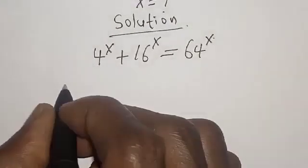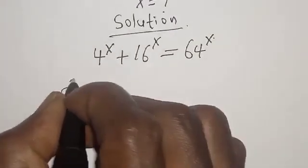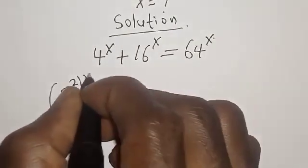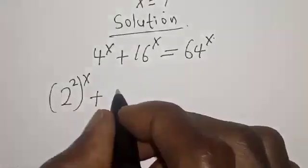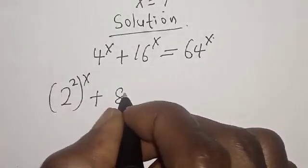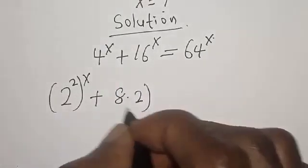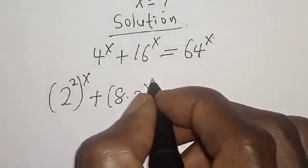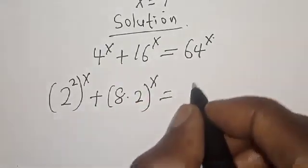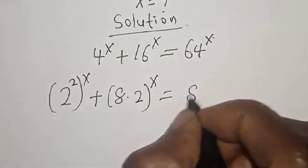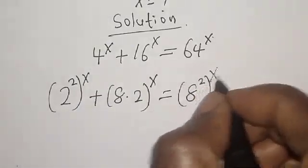4 raised to power s is 2 squared raised to power x, plus 16 is 8 multiplied by 2, raised to power x, is equal to 64 which is 8 squared raised to power x.